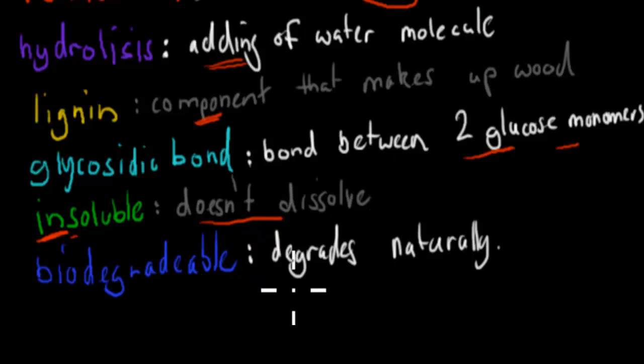Biodegradable, this means it degrades naturally. So whereas non-biodegradable means it takes thousands of years to degrade, or millions of years sometimes, biodegradable means it just occurs naturally and it will decompose and break down by itself. So I hope that was useful.